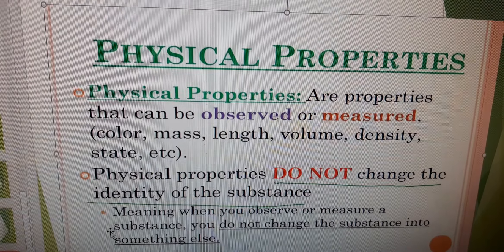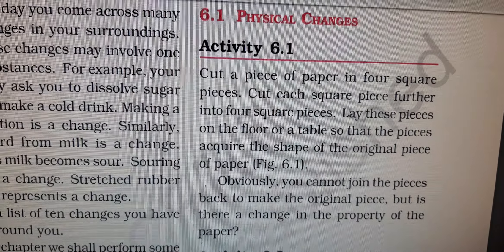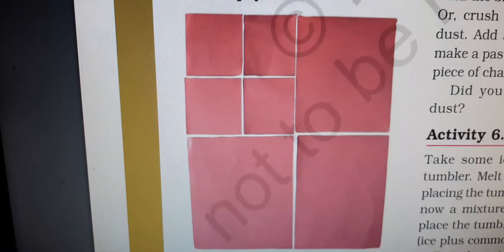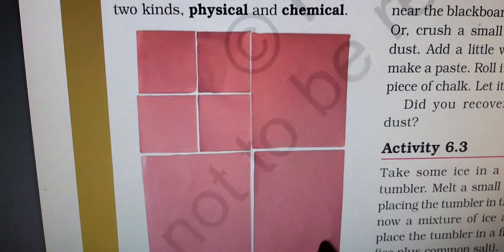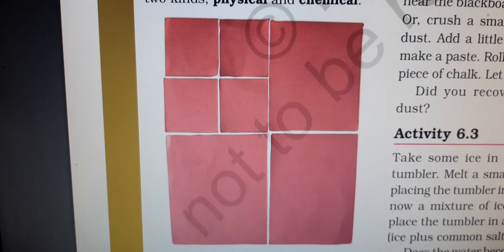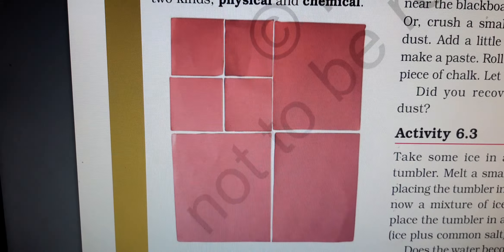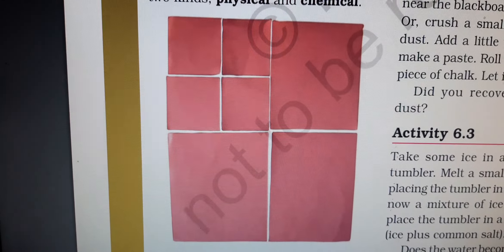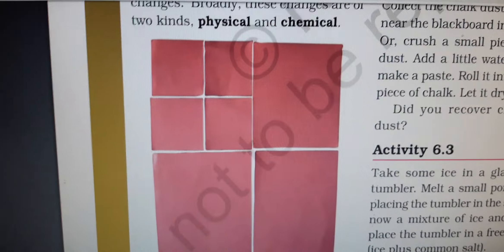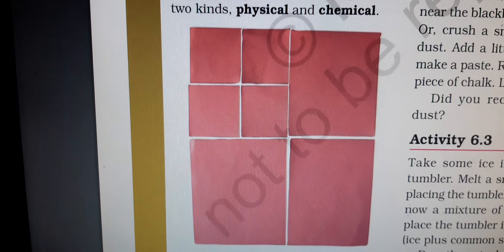Activity 6.1: Cut a piece of paper into 4 square pieces, then cut each square piece further into 4 square pieces. Lay these pieces on the floor or a table so that the pieces acquire the shape of the original piece of paper. Obviously you cannot join the pieces back to make the original piece, but there is a change in the property of the paper. Which physical property has changed? The size of the paper has changed — the original size was larger and the size has now become small.